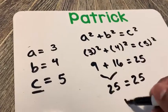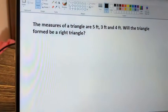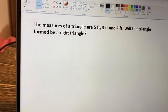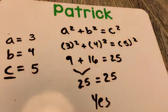So in this case, this will form a right triangle. So when we look here, the question, the measures, five, three, and four, will it form a right triangle? The answer is going to be yes, because we got a true statement.